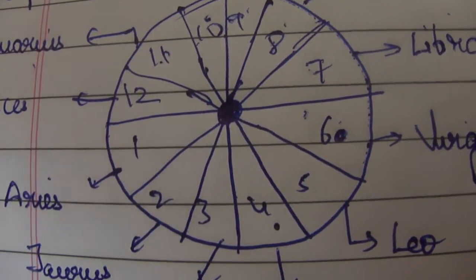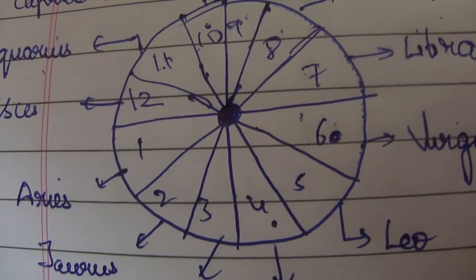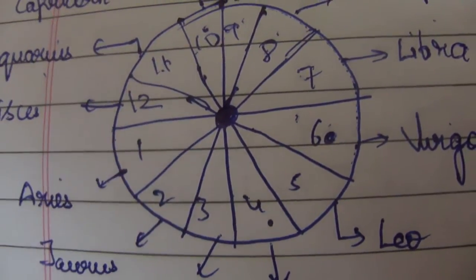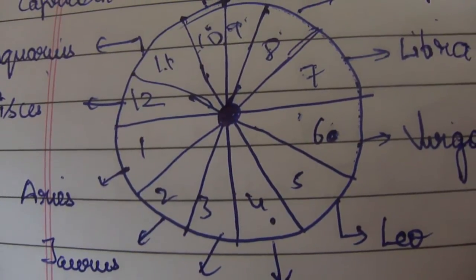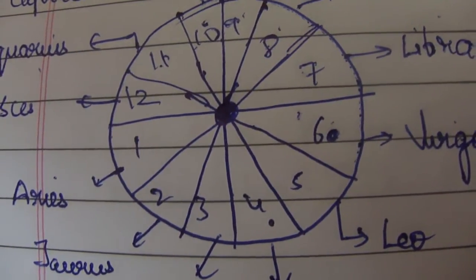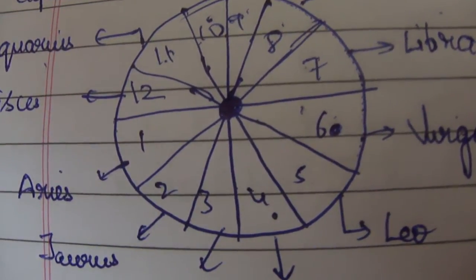In the 12th, first, and the second house, that will become the Sadesati period. Whenever that is happening, that's called Sadesati. For example, it's always taken with respect to the moon.